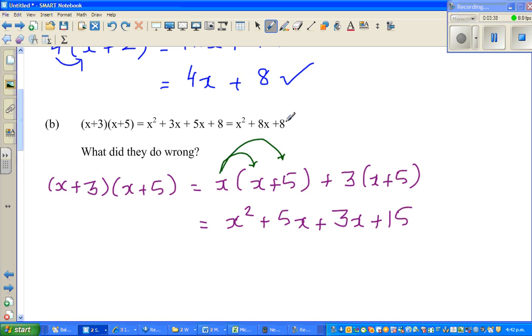So the mistake that student did is you're adding here. What the student did is 3 plus 5, that's how the student got 8. 3 plus 5 is 8. Whereas this is wrong. The student should have done 3 times 5 which is 15.